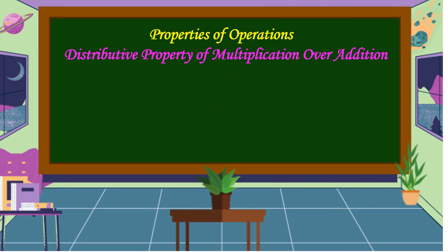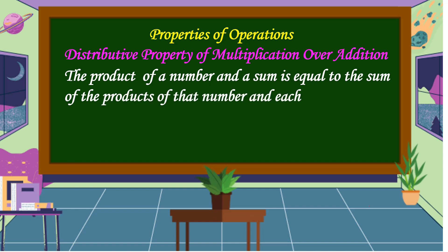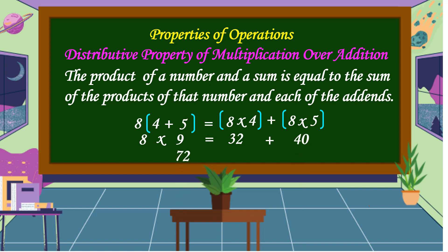The next property is the distributive property of multiplication over addition. This property states that the product of a number and a sum is equal to the sum of the products of that number and each of the addends. For example, 8 times (4 plus 5) is equal to (8 times 4) plus (8 times 5). Let's check: 4 plus 5 is equal to 9, so 8 times 9 is equal to 72. And 8 times 4 is equal to 32, plus 8 times 5 is equal to 40, giving 32 plus 40 which is also 72. As you can see, our equation is balanced.